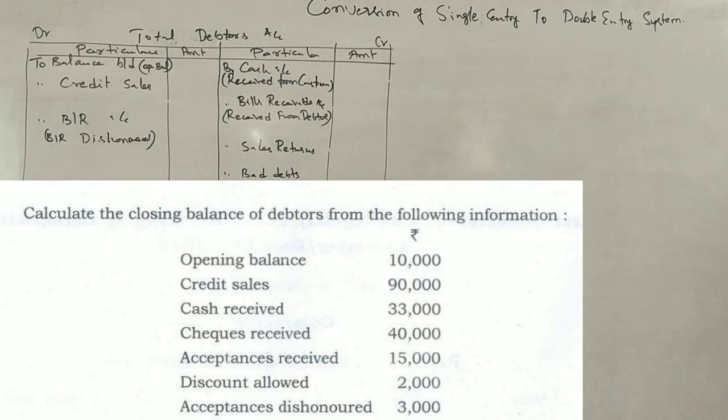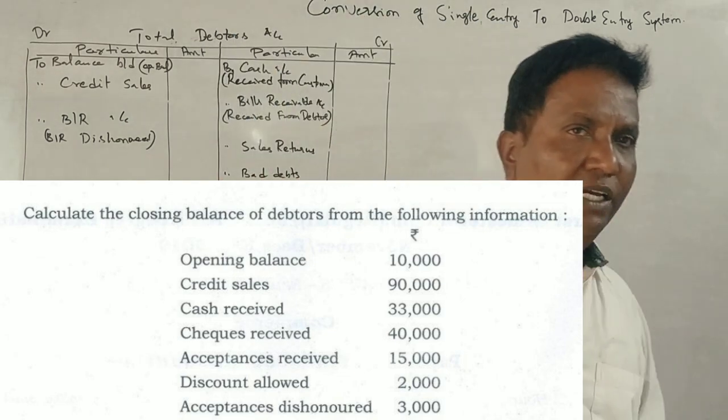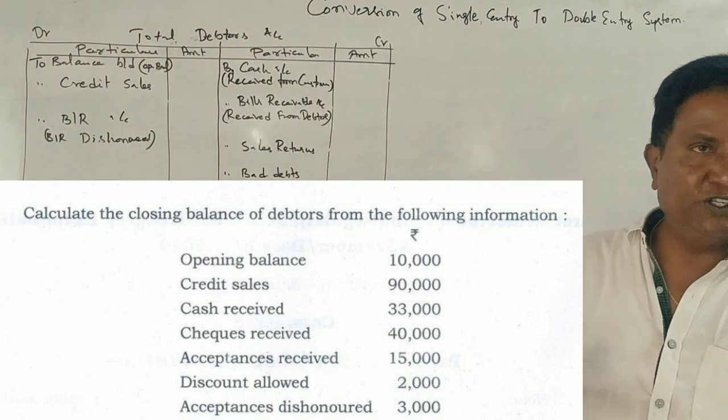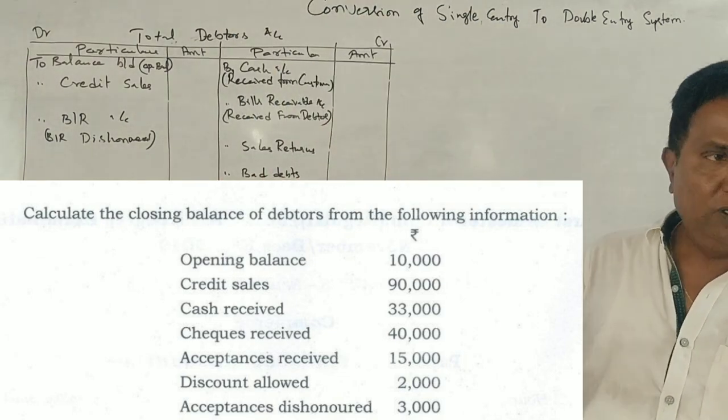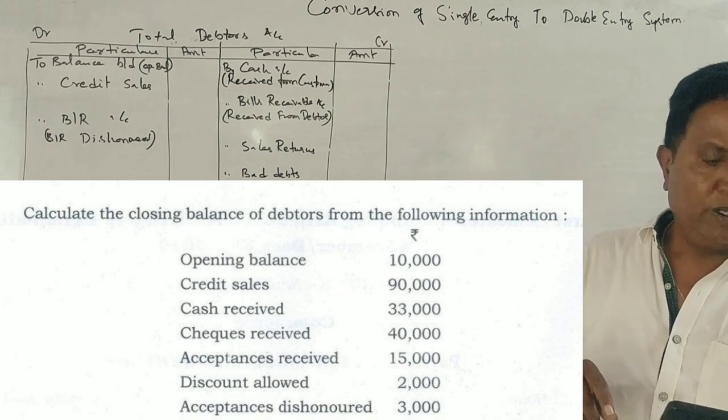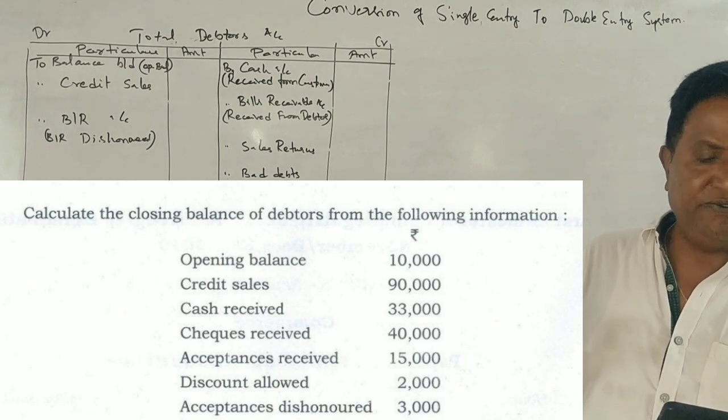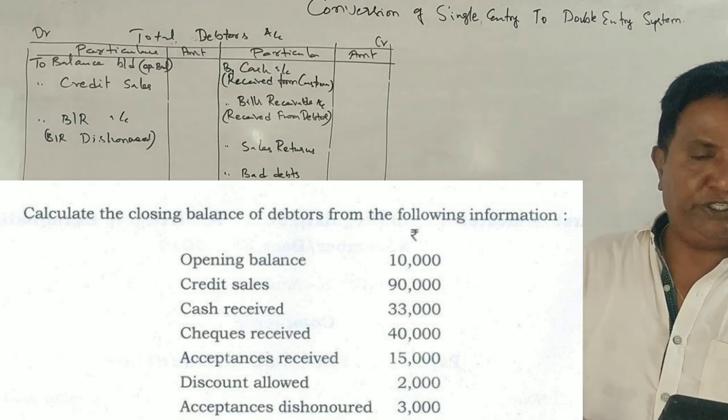Welcome to the 2019 question paper of NEP syllabus. Conversion of single entry to double entry system. Calculate the closing balance of debtors from the following information.